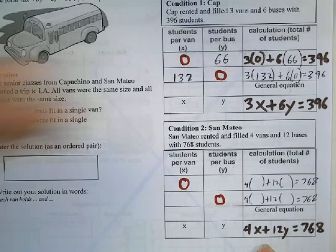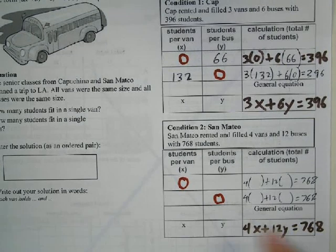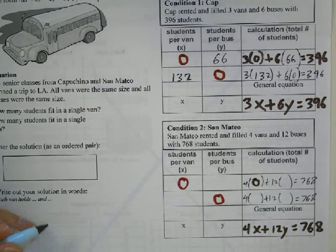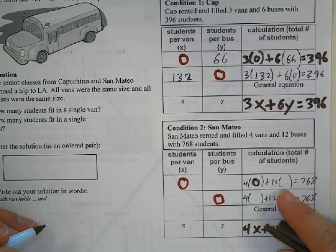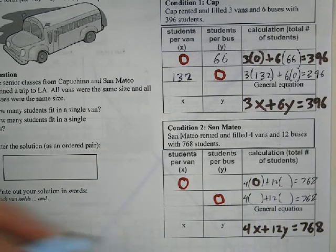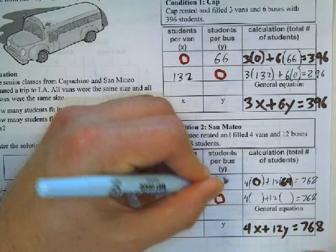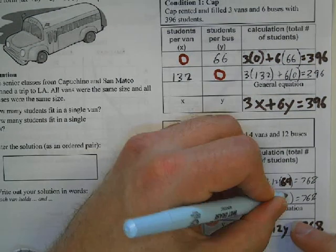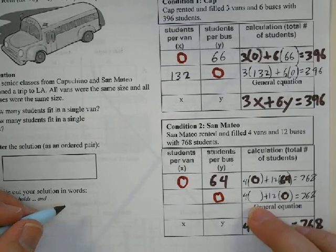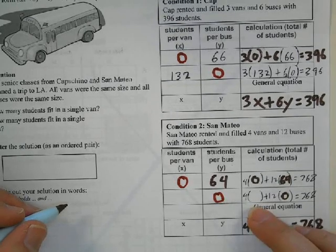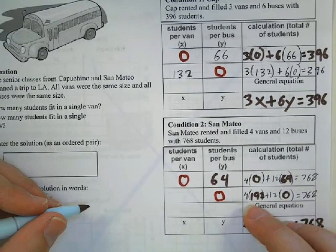You might want to hit pause for a second to think about this. If I have zero students on the bus, that means all of these 768 kids have to go on the vans, so I do 768 divided by 12, and I'm going to get 64. Now if no kids went on the vans, then all 768 kids would have to be dispersed onto the buses, which would be 192 if you do 768 divided by four.